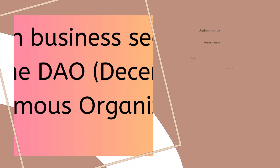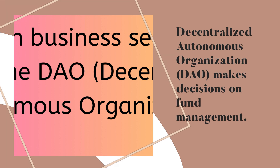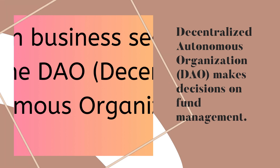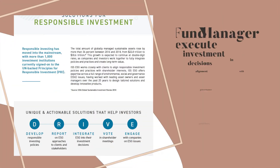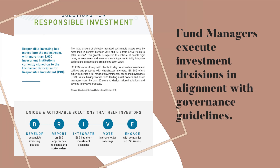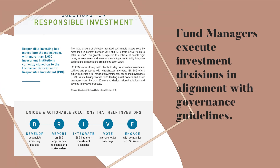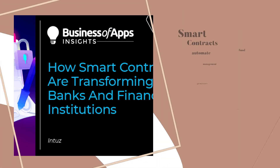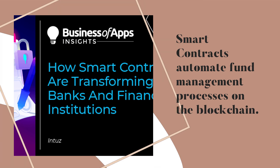The Decentralized Autonomous Organization, or DAO, makes decisions on fund management. Fund managers execute investment decisions in alignment with governance guidelines. Smart contracts automate fund management processes on the blockchain.